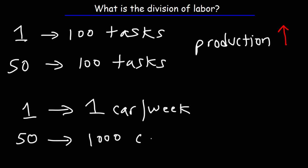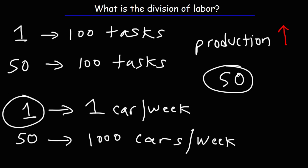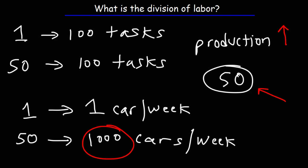They might be able to make 1,000 cars per week. If those 50 individuals worked separately instead of as a team, they might make 50 cars a week, assuming one person makes one car a week. But together, they are able to make more as a team than if they all worked individually. This illustrates the concept of synergy, where the sum total generated by a team working together is greater than the sum total of the individuals working by themselves. So as a team, the 50 individuals can produce 1,000 cars per week, versus only 50 if they worked alone.